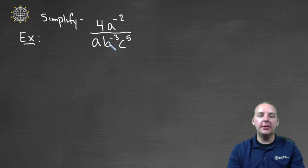So anything with a positive exponent is going to stay put, and a negative exponent term is going to change positions, from numerator to denominator, or vice versa. So here we'd have four. The a to the negative two would come to the denominator and become a to the positive two.